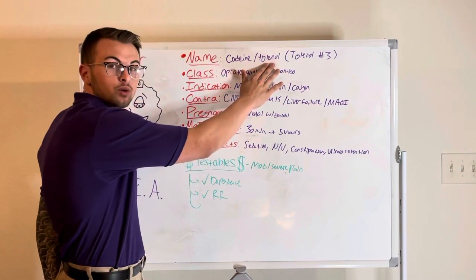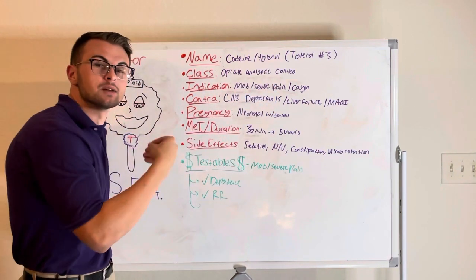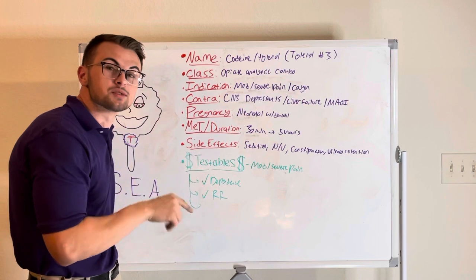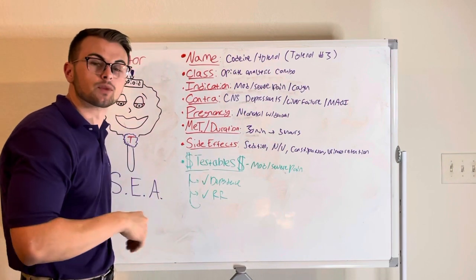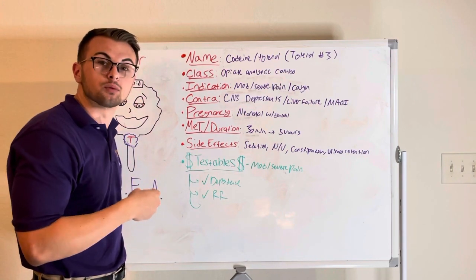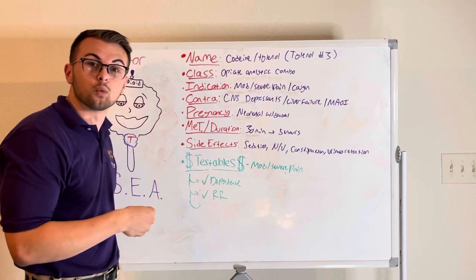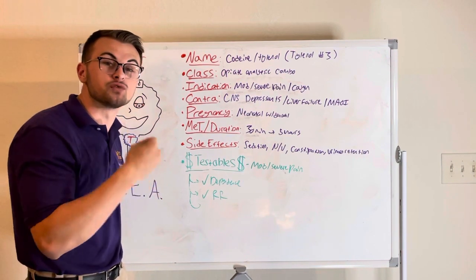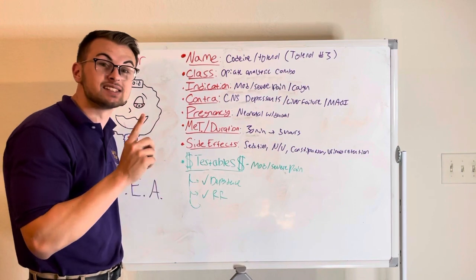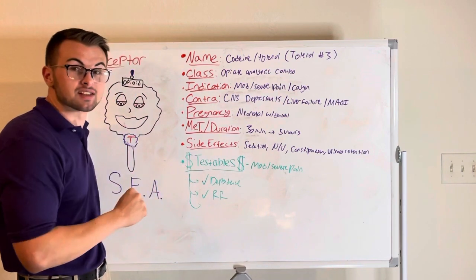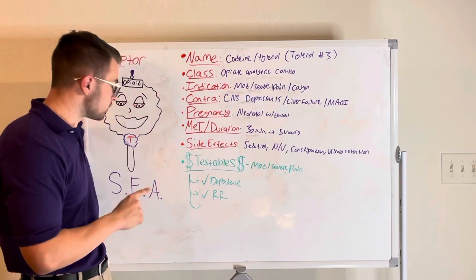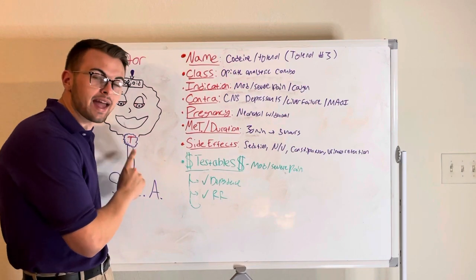Next we have acetaminophen or Tylenol. Acetaminophen works to decrease prostaglandin synthesis. Normally, prostaglandins are produced due to tissue damage. When they travel to the hypothalamus, they produce fever and pain. Acetaminophen inhibits the synthesis of prostaglandins, which will reduce fever and decrease our pain level.